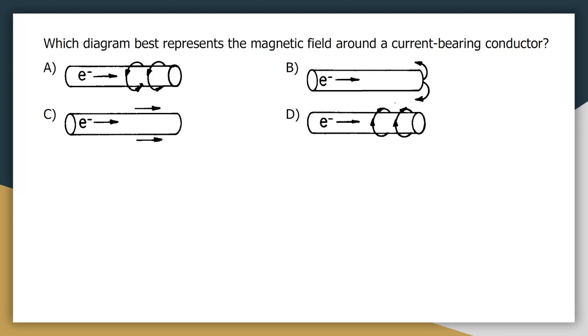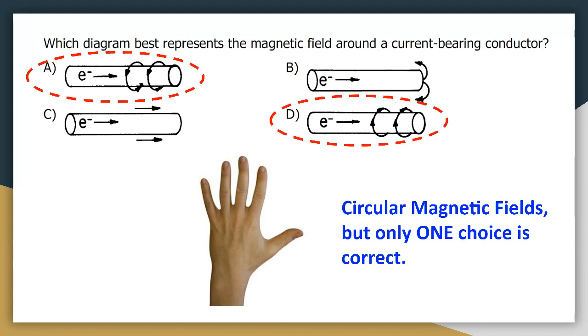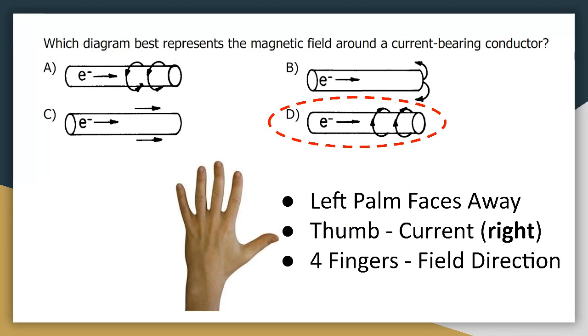Use the first left hand rule to pick the correct answer. Click on the slide to get a hint. The only two possible choices are A or D. This is because these are the only two choices that have a circular magnetic field. The answer choice is D. With your left palm facing away and your thumb in the direction of the current, we see that the magnetic field in front of the wire points up.